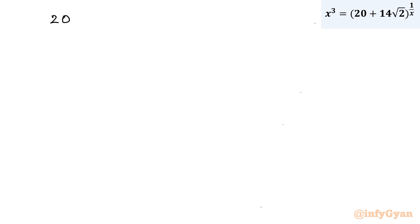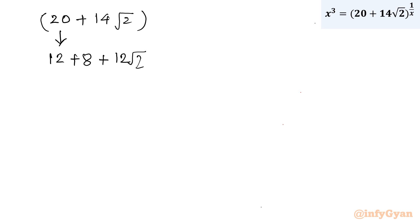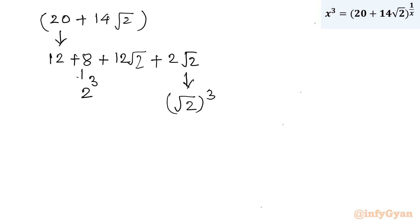Let me simplify the base 20 + 14√2. I write 20 as 12 + 8 and 14√2 as 12√2 + 2√2. Now 8 = 2³ and 2√2 = (√2)³. So I am identifying a = 2 and b = √2, with a³ and b³ appearing in the expression.